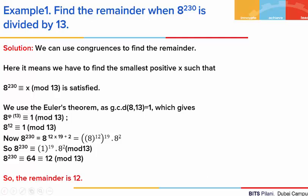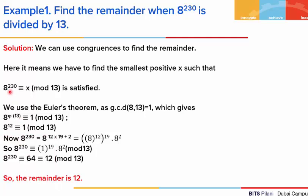Here in this example, it means: what is the smallest positive x such that when 8 to the power 230 is divided by 13, it gives us a congruence to x? Or, what x satisfies this congruence? You should always remember, the remainder is nothing but the smallest positive residue. So here we are looking for that smallest positive residue.